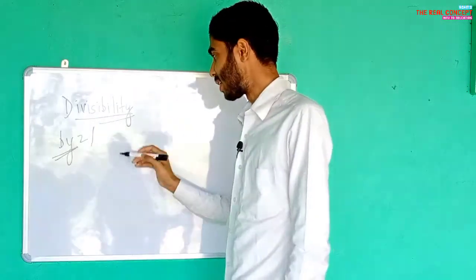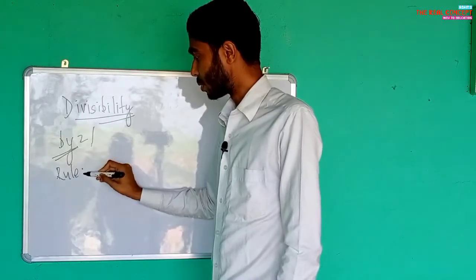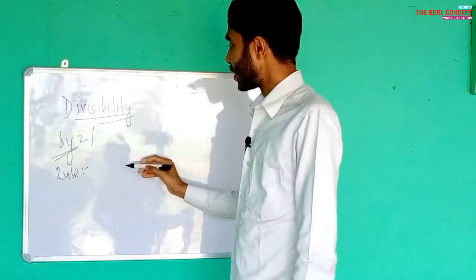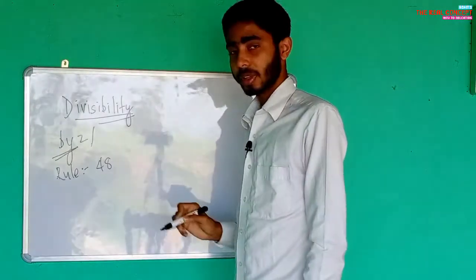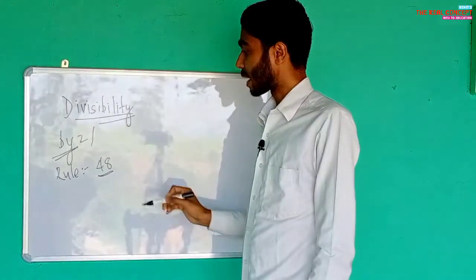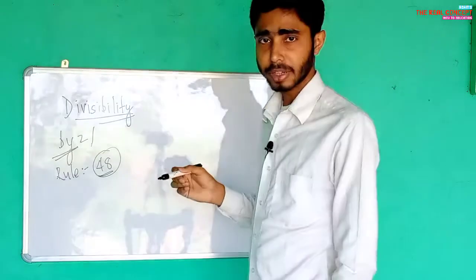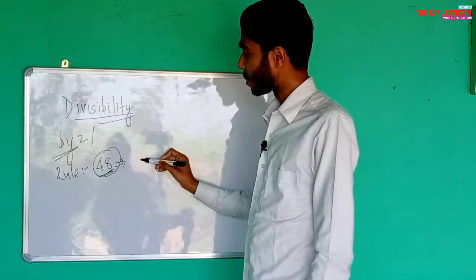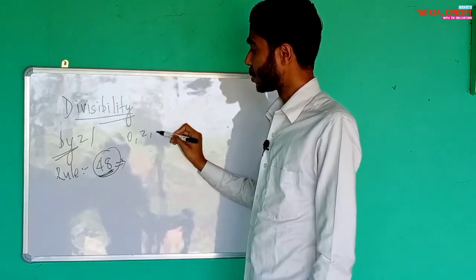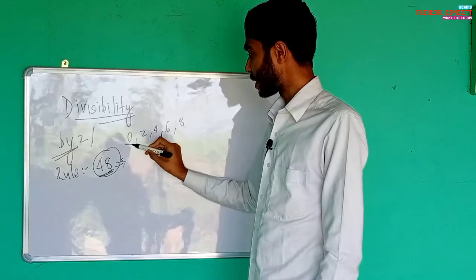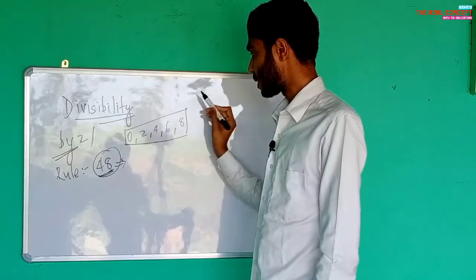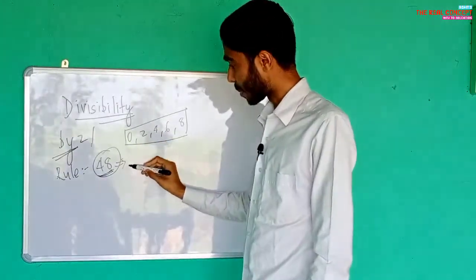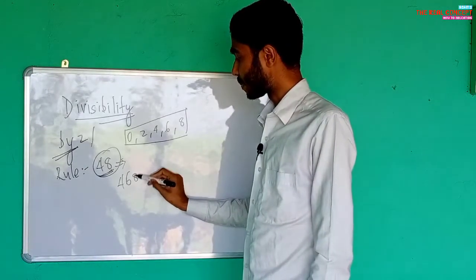The rule is: we check the ones place of the number. Yadi kisi number ki ones place par zero, two, four, six, or eight ho — if any number's ones place has zero, two, four, six, or eight — then that number is divisible by two.